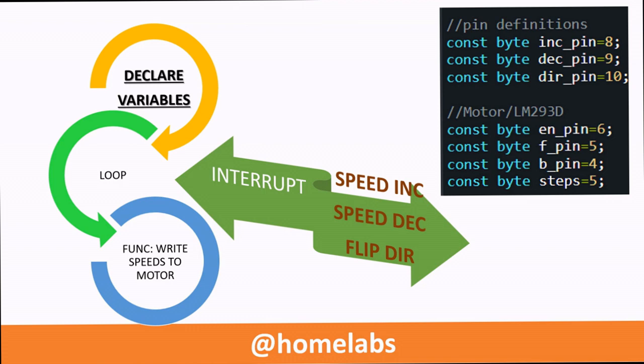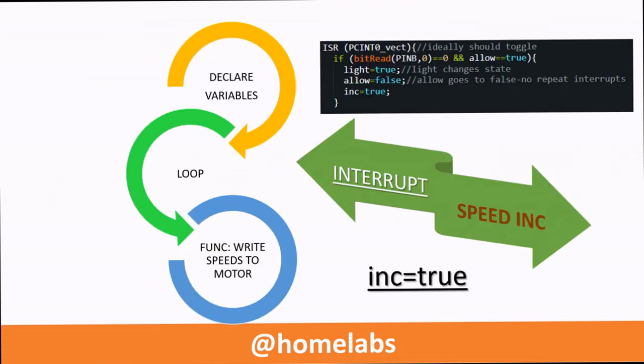Steps is a variable which ensures that the speed changes in steps of 5 units. Here is a closer look at the three pin change interrupts. The first pin change interrupt as we said was on pin 8 and this toggles the variable INC and INC is set to true. This informs the loop that the speed has to be incremented by 5 units.